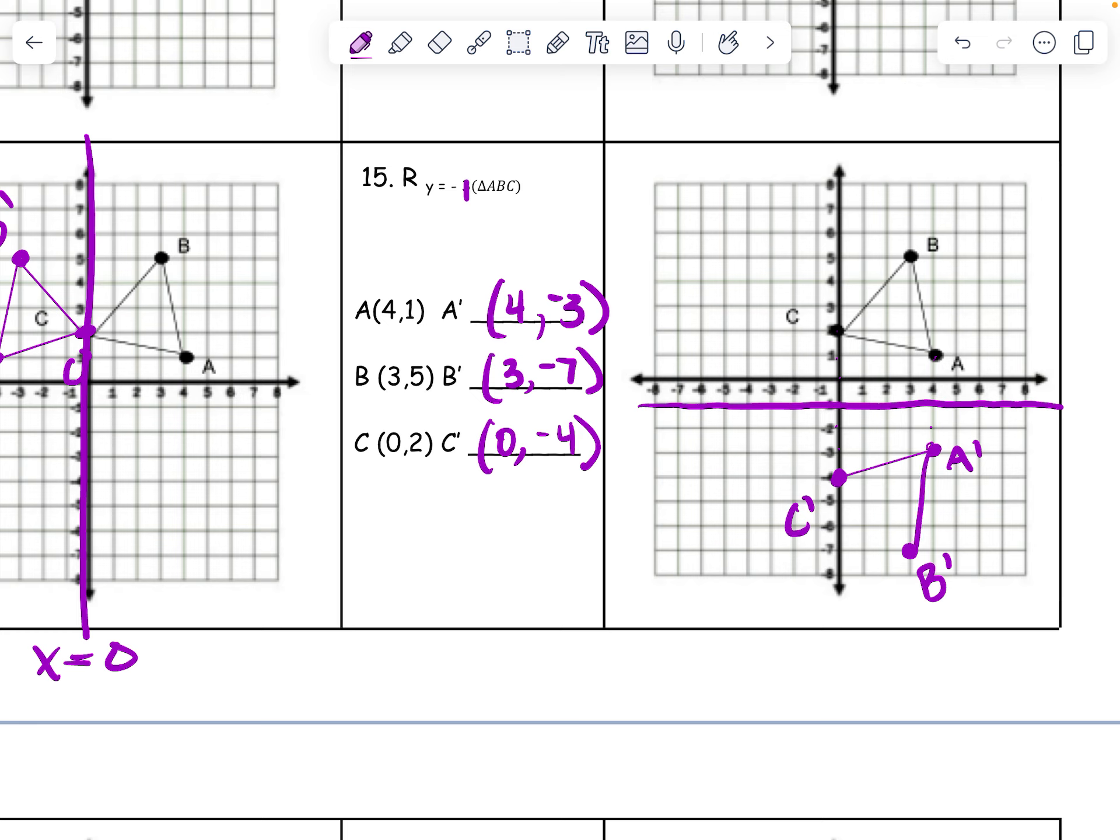Make sure that if I folded it on my line of reflection, those two would line up. That's 2 away, 2 away. 1, 2, 3 away, 3 away. Yeah, I think we're good.